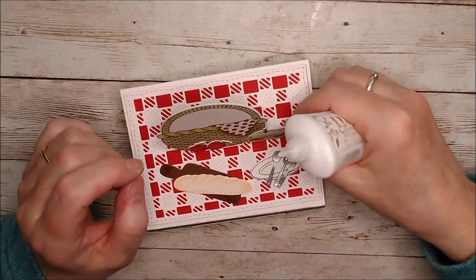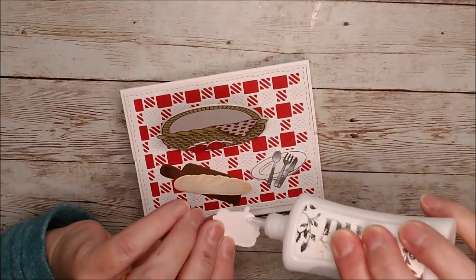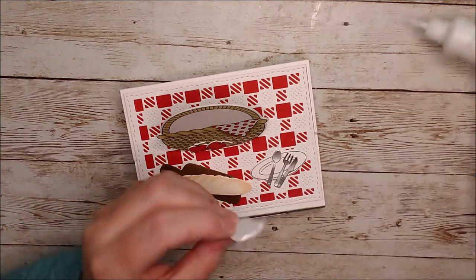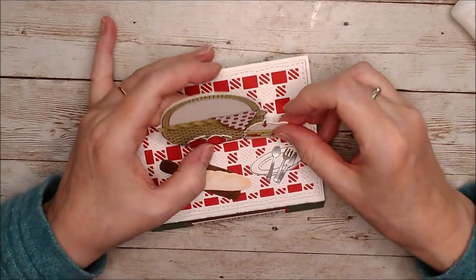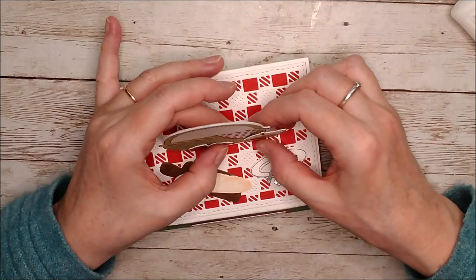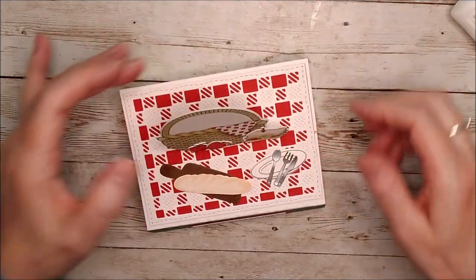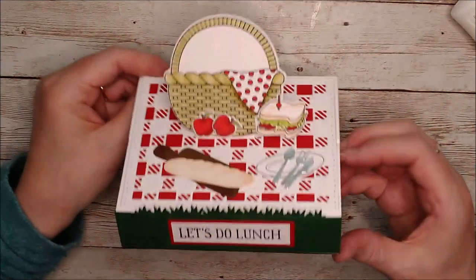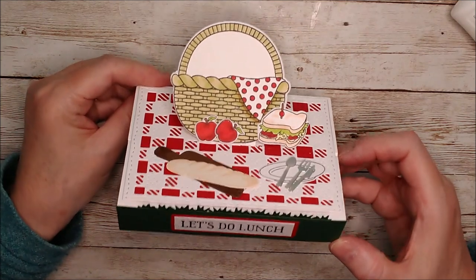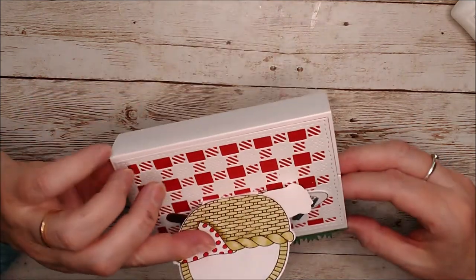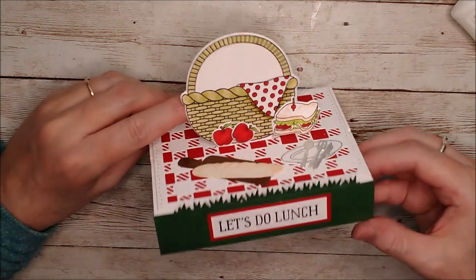And I'm going to add that on beside the basket. So I'm just going to put some glue on this part and attach it on there. Oh, that looks nice. And then you can see that the basket's finished at the back as well there.